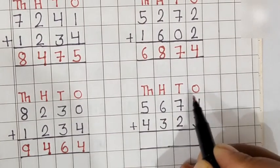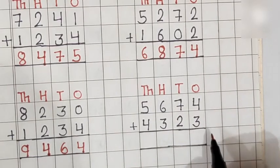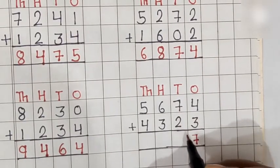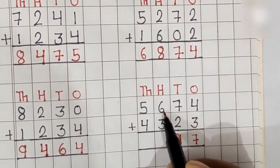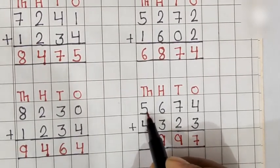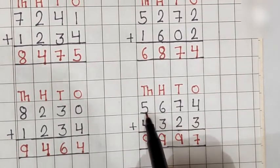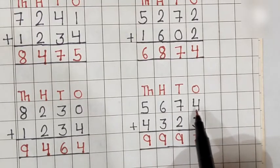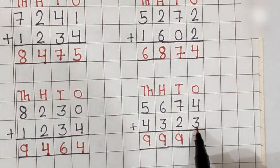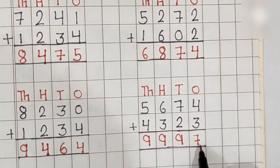This is the 1s place, 10s place, 100s place, and 1000s place. 4 plus 3 is equal to 7. 7 plus 2 is equal to 9. And 6 plus 3 is equal to 9. So, 5,674 plus 4,323 is equal to 9,997.